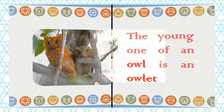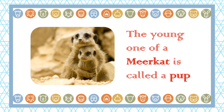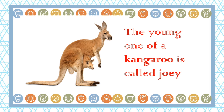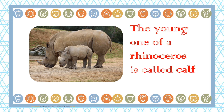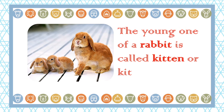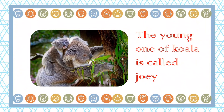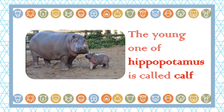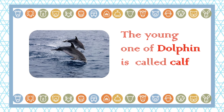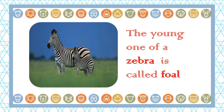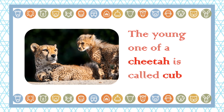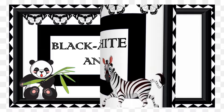The young one of a meerkat is called a pup. The young one of a kangaroo is called a joey. A baby rhino is called a calf. Baby rabbit is called a kitten or kit. The young one of a koala is called a joey. The baby hippo is called a calf. The baby dolphin is called a calf. The young one of a zebra is called a foal.